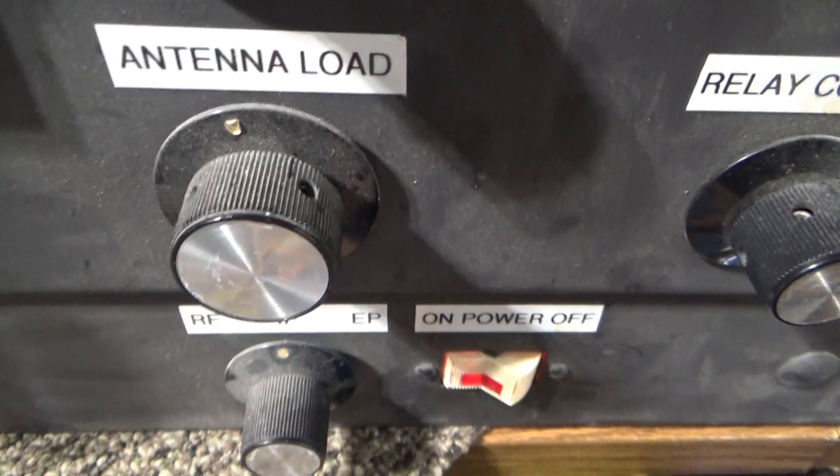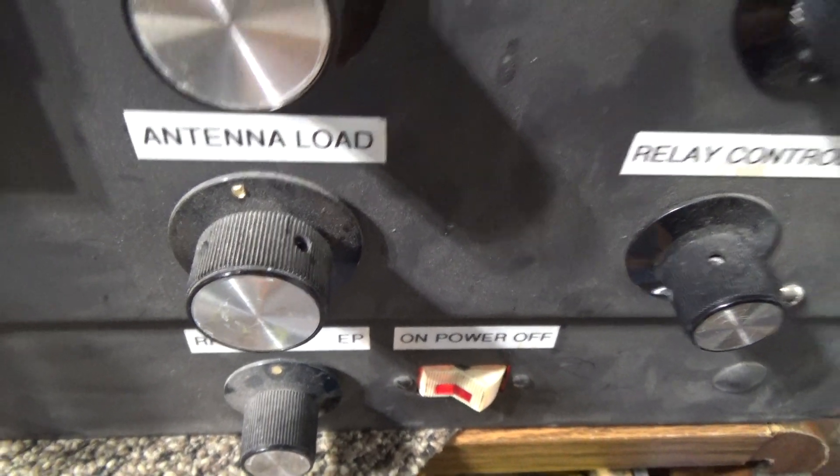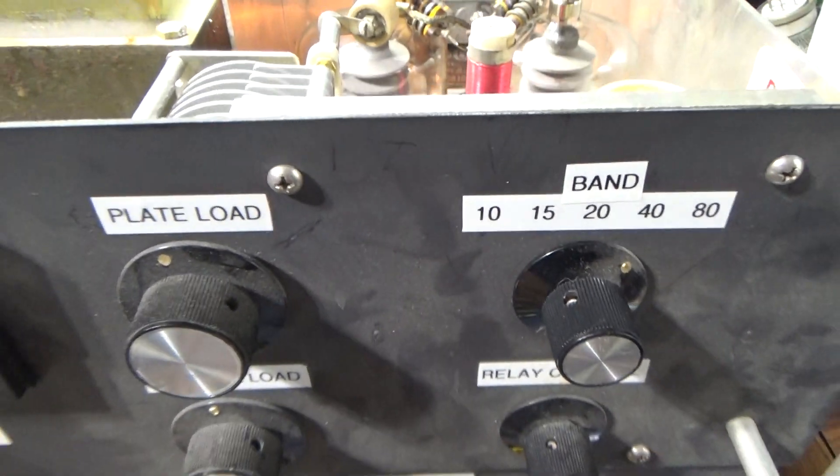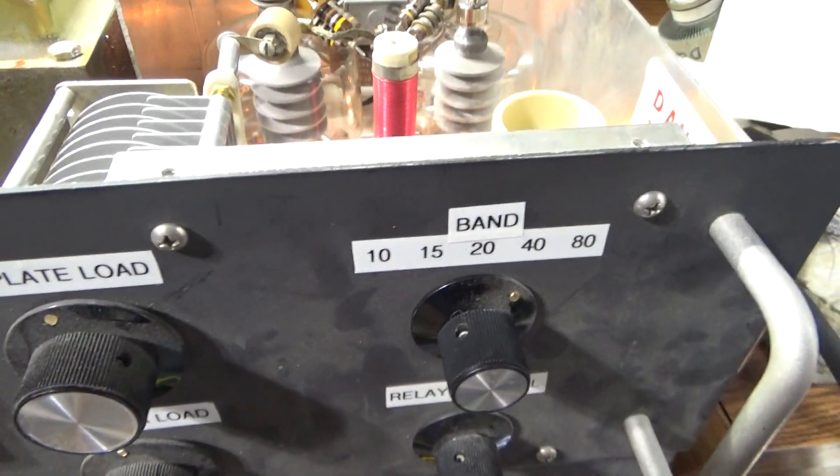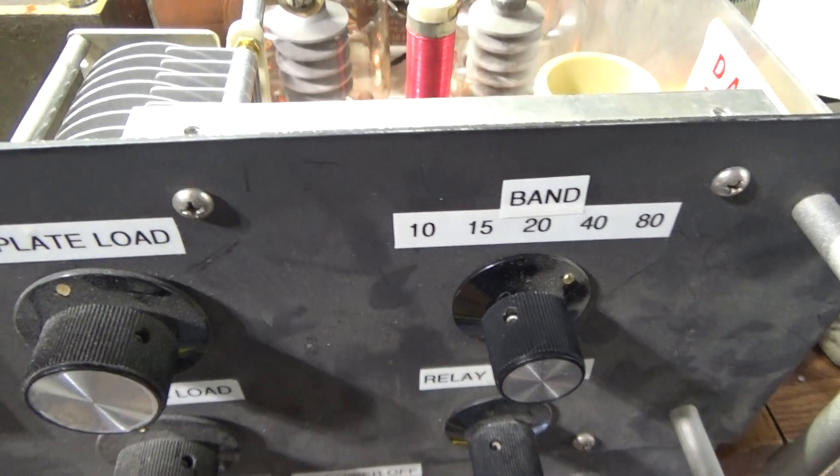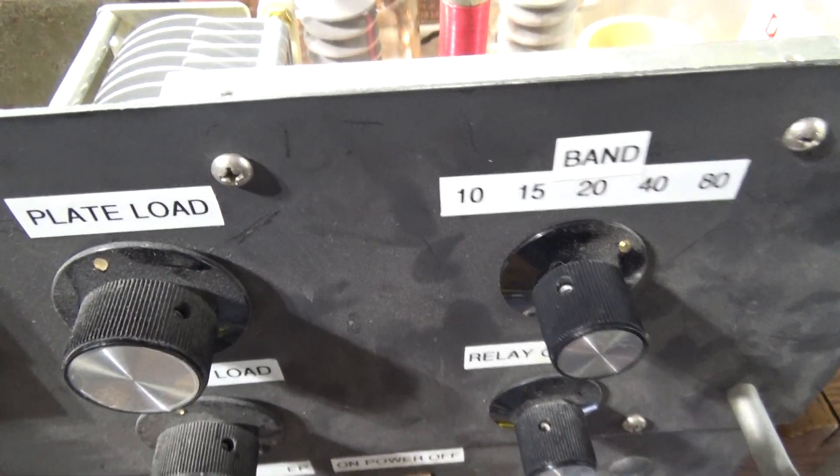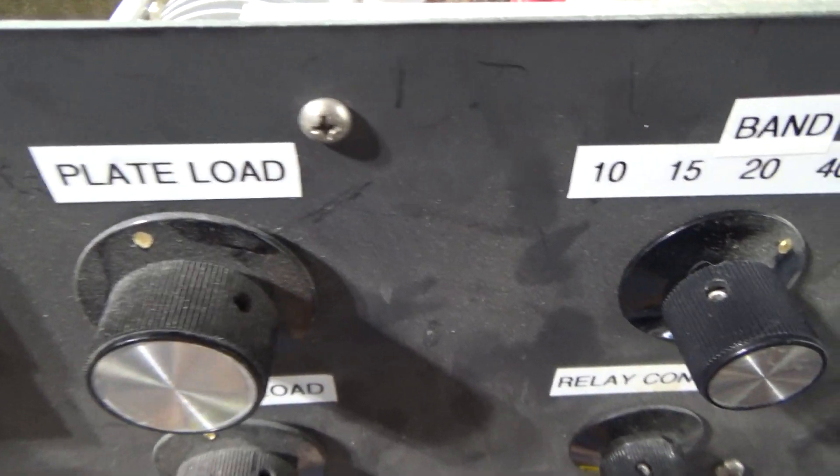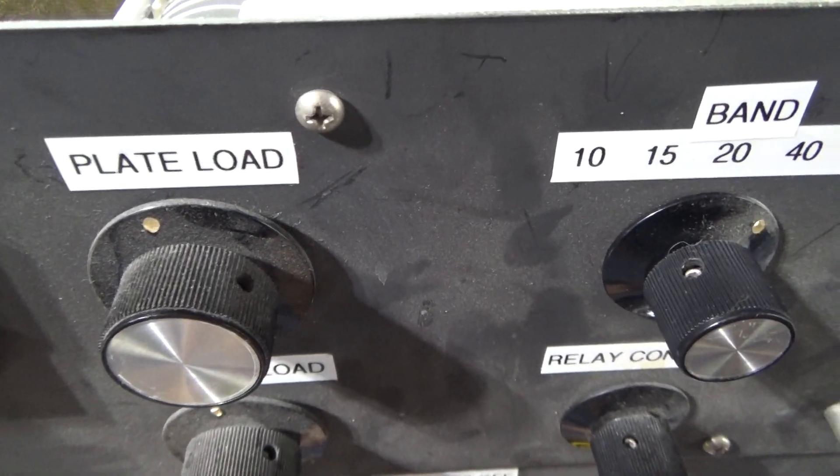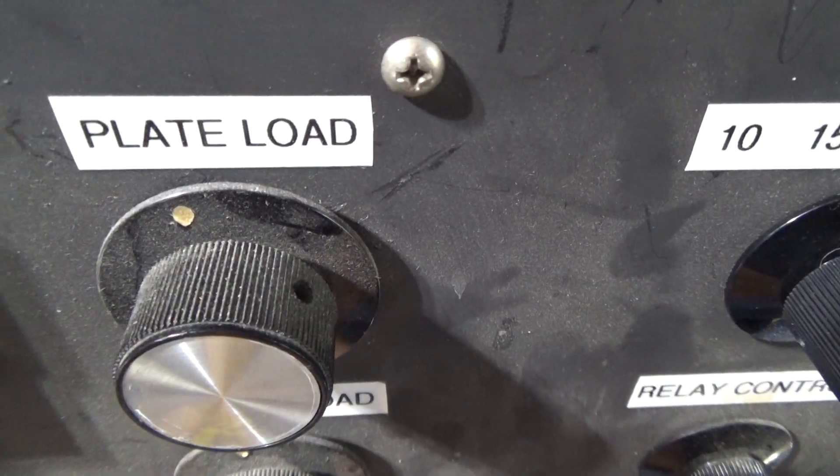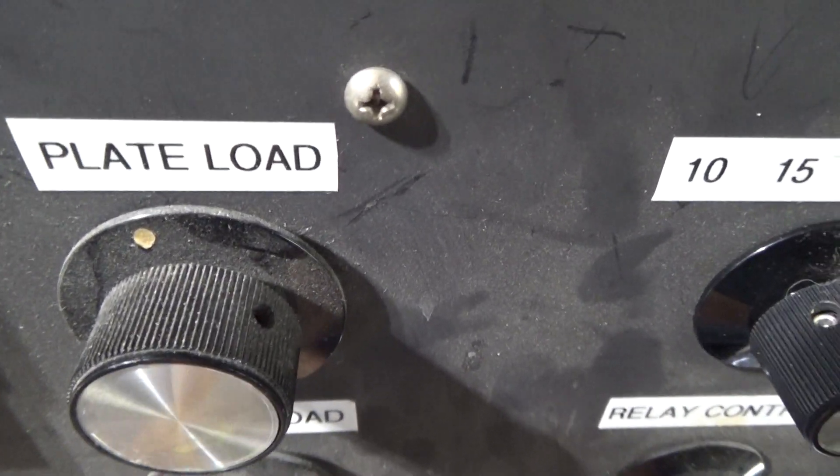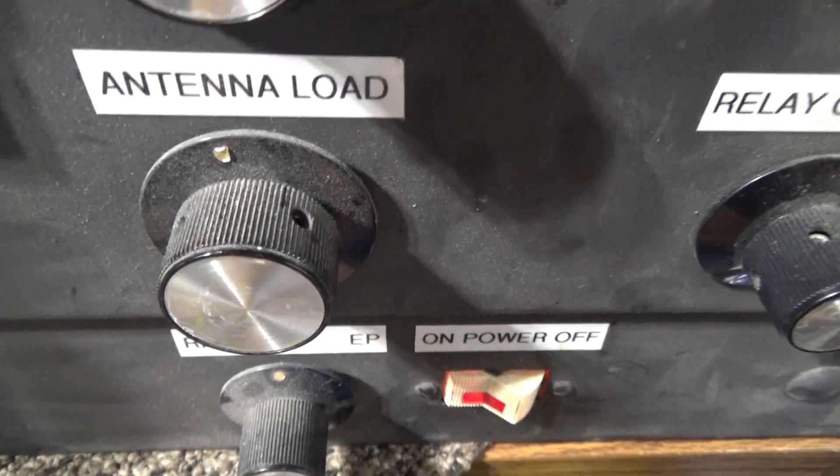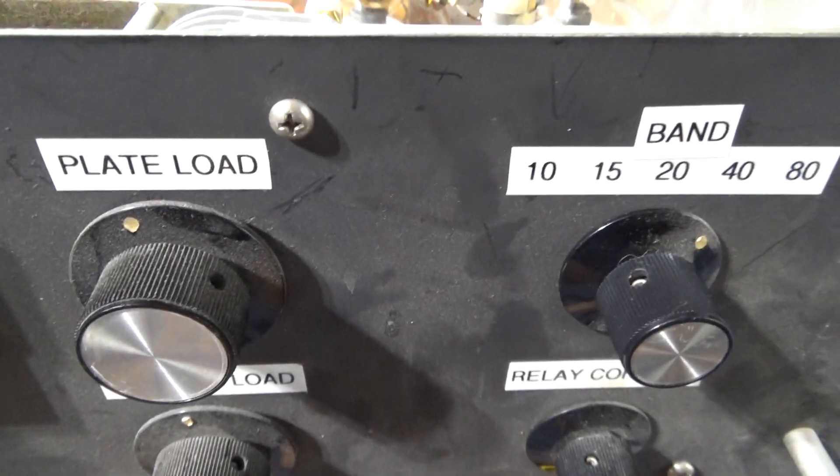So the only thing you could vary was the load. When you have an amp that's made for one band and you got a certain set of tubes in it, you can just match the load or the tune. I keep getting mixed up now seeing that load the tune to the tubes. Basically, the plate tune cap tunes the tubes and the load tunes the antenna, if that makes any sense, even though they interact with each other.